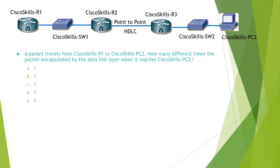The question reads: a packet travels from R1 to PC2 — how many different times is the packet encapsulated by the data link layer when it reaches PC2? The keyword here is encapsulated. The simple rule is that a packet gets encapsulated by the data link layer each time it exits a router interface onto the wire. Counting the encapsulations, it happens here, here, and here — totally three times. So the answer is C. You can find the detailed explanation in the video.